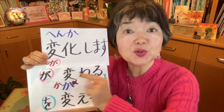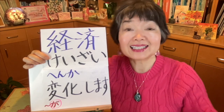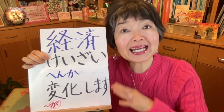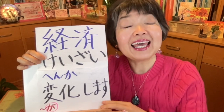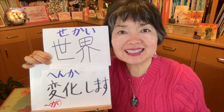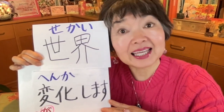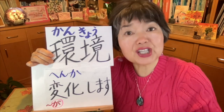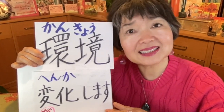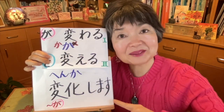Henka means like a transformation. Henka shimasu. For example, the economy in Africa is changing — it means the African economy is transforming. アフリカの経済が変化しています. The world is changing: 世界が変化しています. The environment is changing: 環境が変化しています. You can think of 変わります with this kanji as almost the same as 変化します — to transform.